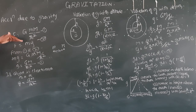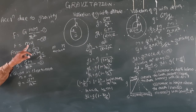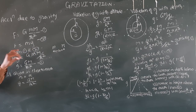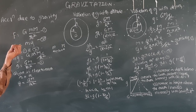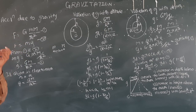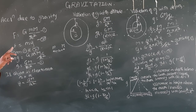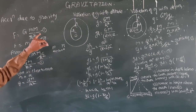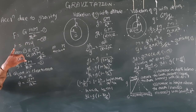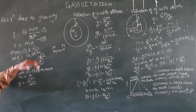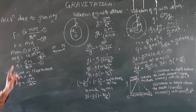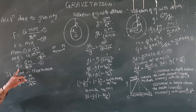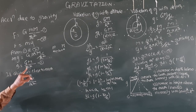Acceleration due to gravity: the net force is equal to mass into acceleration. So gravitational force is equal to mass into acceleration due to gravity. Thus G times M times m upon R square — the small m cancels — and acceleration due to gravity is equal to GM upon R square.